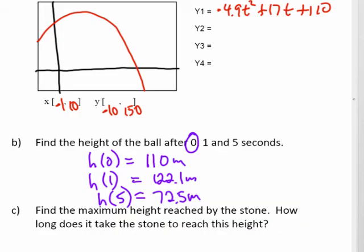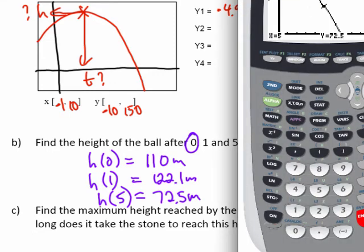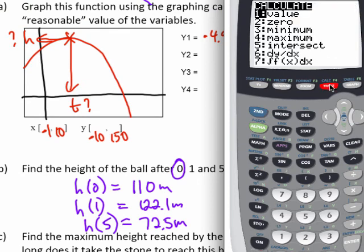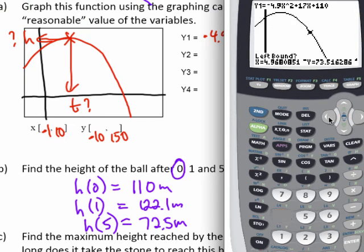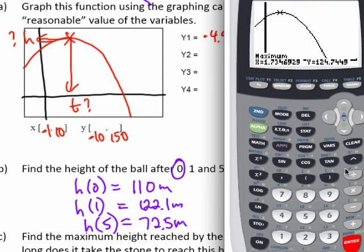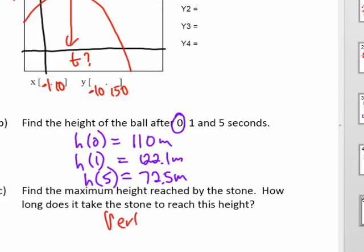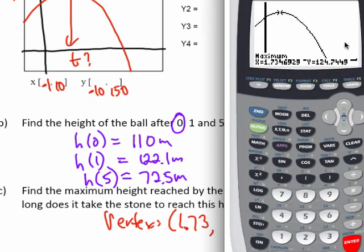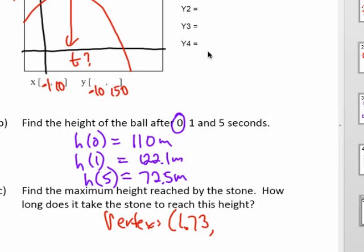Find the maximum height reached by the stone. Well, that would occur at the vertex right here. How long does it take to reach this height? So I'm asked two things. What is the maximum height? And at what time does this occur? Well, both of these pieces of information are given to me by the vertex. So I want the maximum value of the parabola. Second function trace. Maximum button. Move my cursor first to the left of the maximum. Enter. To the right of the maximum. And then as close as I can get to it. So 1.73 and the vertical 124.75.